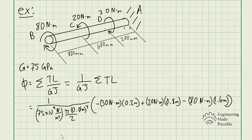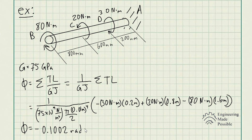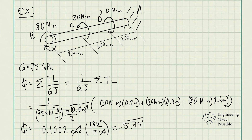Doing the calculations, the angle of twist is negative 0.1002 radians. You can convert radians to degrees by multiplying by 180 divided by pi, which gives us negative 5.74 degrees. Since clockwise is our negative sign convention, the angle of twist at point B is 5.74 degrees clockwise.